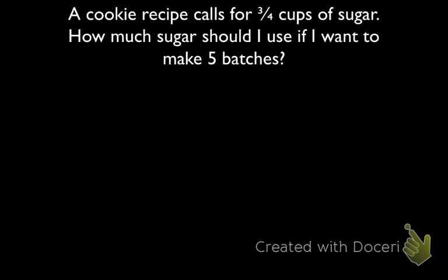Let's look back at this question that we worked on in the last lesson. A cookie recipe calls for 3 quarters cups of sugar. How much sugar should I use if I want to make 5 batches? If I were to represent this as a multiplication equation, I would get 5 batches times 3 quarters of a cup per batch.